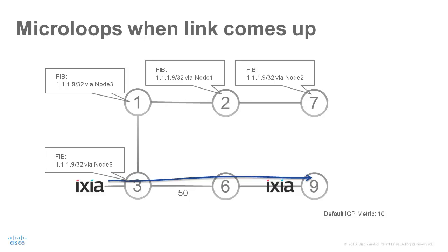Initially, the FIB entries have next hops for the topology without the link from node 6 to node 7, and the traffic from node 3 to node 9 traverses the link between node 3 and node 6. Now the link between node 6 and node 7 comes up.